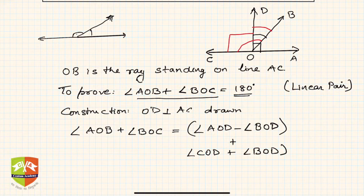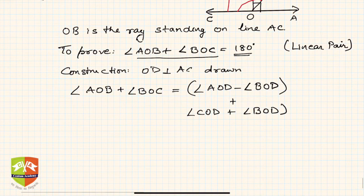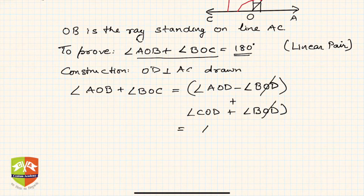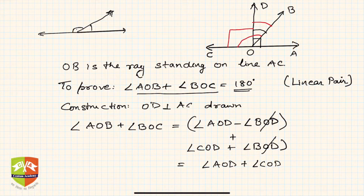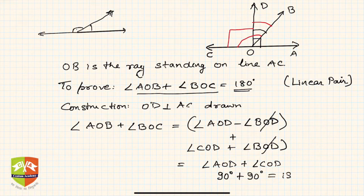Now simplifying: minus BOD plus BOD gets cancelled, and it is nothing but angle AOD plus angle COD. Angle AOD is clearly 90 degrees and angle COD is also 90 degrees, so this gives us 180 degrees.